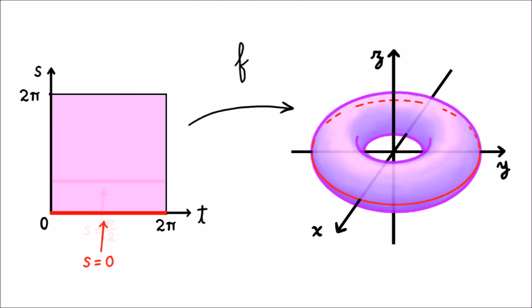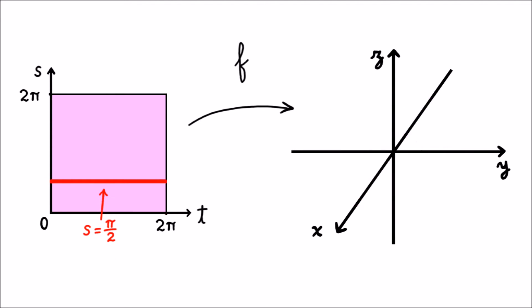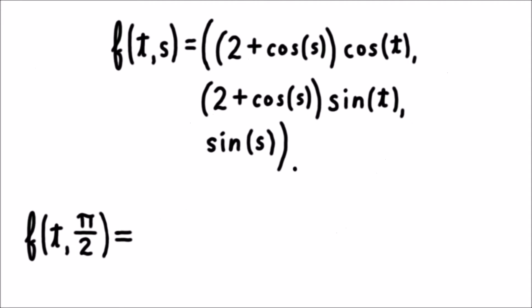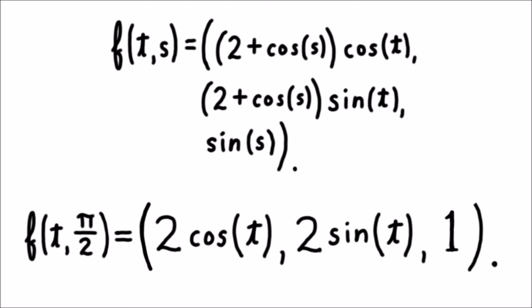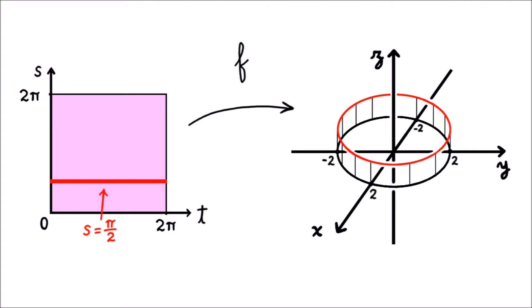What if we look at a different horizontal line instead, like s = π/2 for example? When we set s equal to π/2, the function becomes (2 cos t, 2 sin t, 1). Now as t varies, this traces out a circle of radius 2 in the plane z = 1, hovering one unit above the xy-plane.